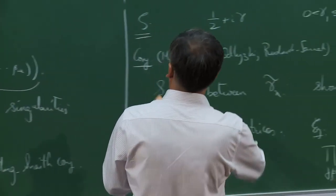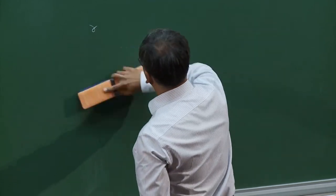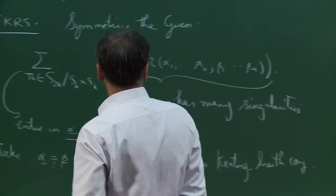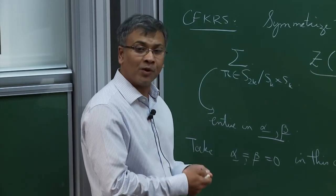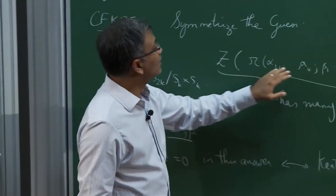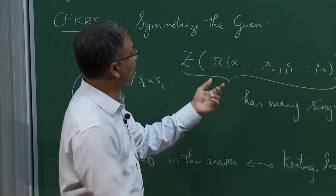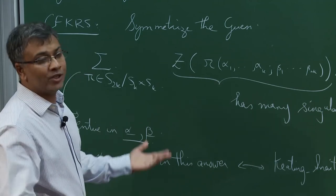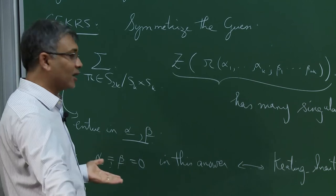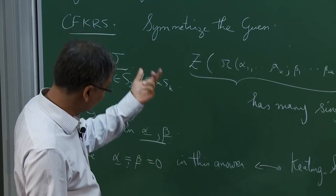What we are missing is that all known methods of attack — starting with the approximate functional equation — only capture two of the permutations: the identity and the involution swapping all alphas with all betas. You miss all the other S_{2k} symmetries from the start. A long computation is needed to eventually recover all the required symmetries, but we don't know how to keep the full symmetry throughout. This is the fundamental obstacle.